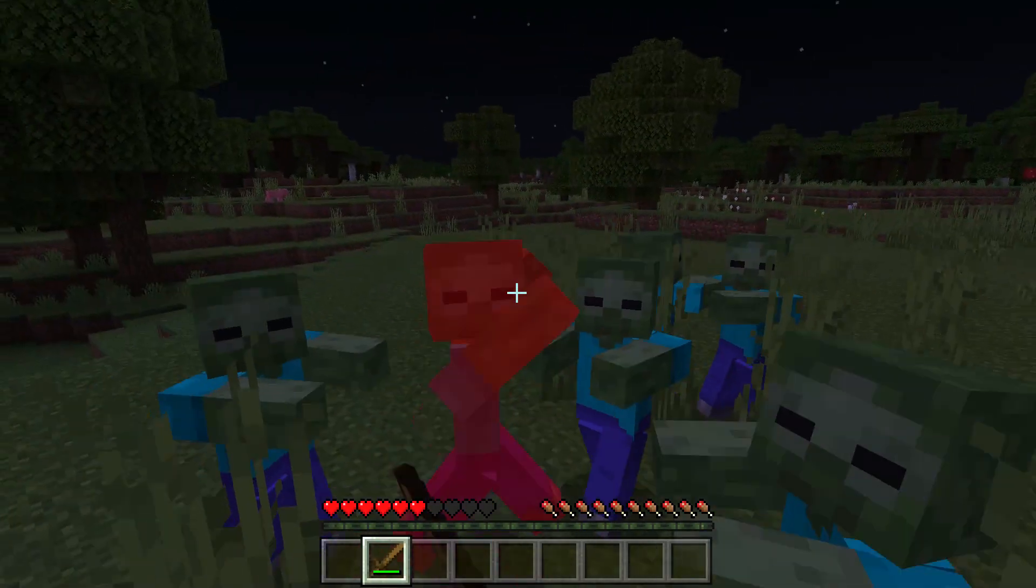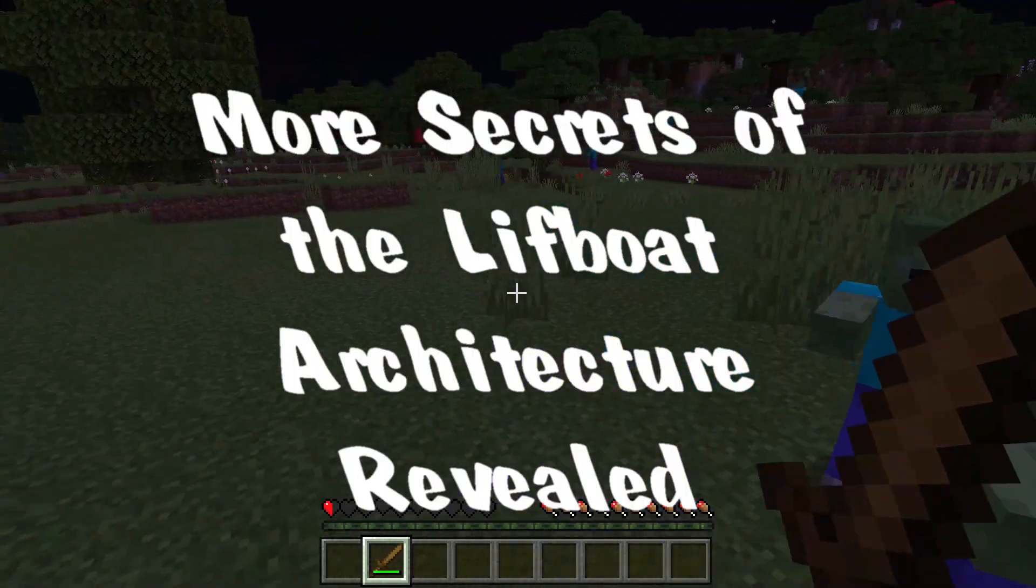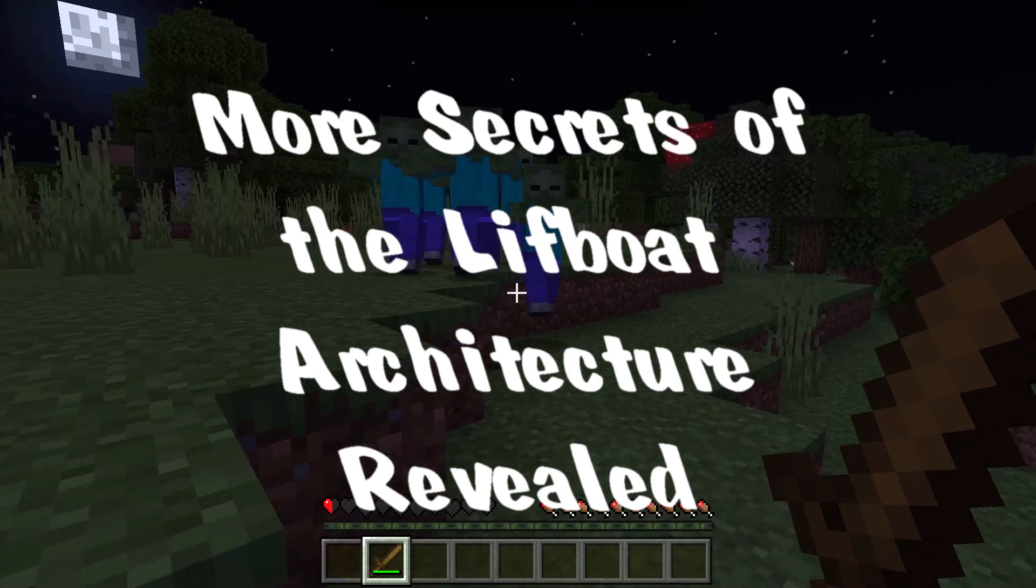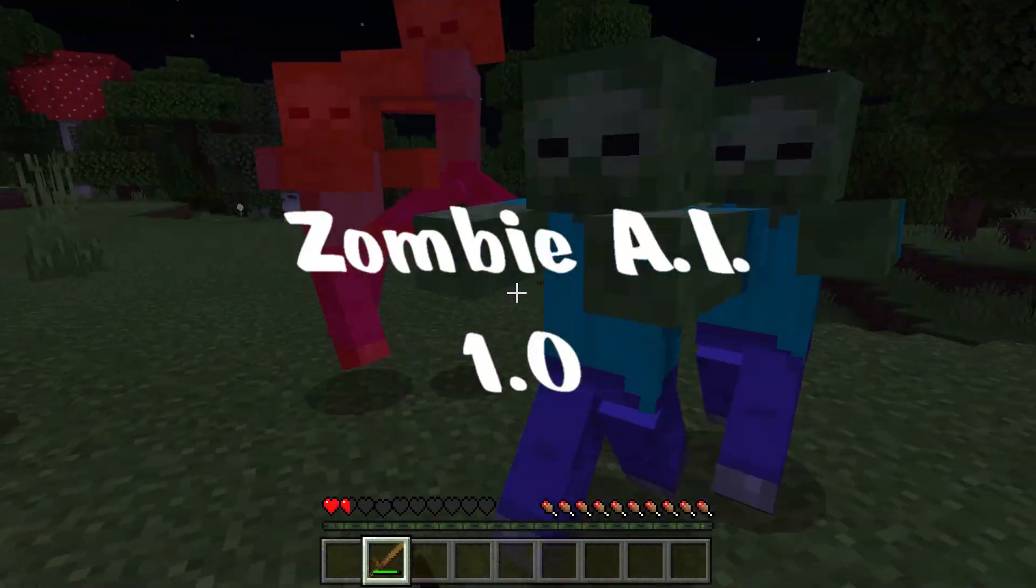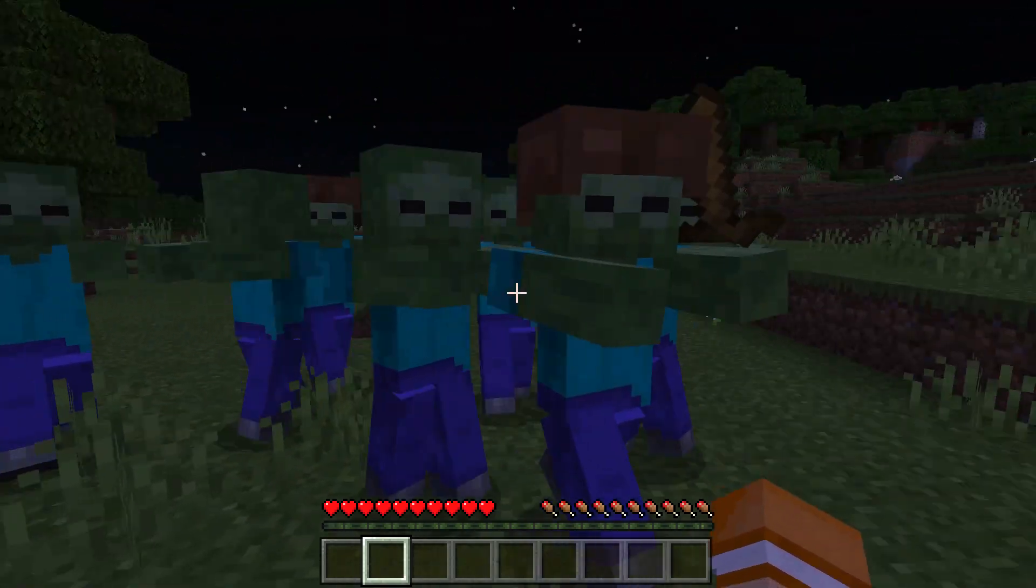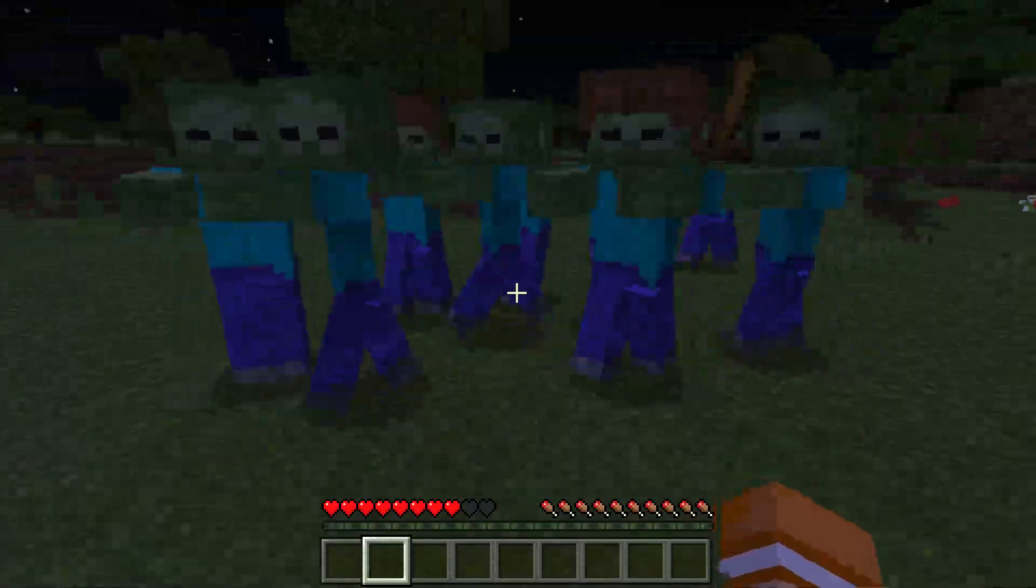Have you ever wondered what makes the mobs on the Lifeboat Network such formidable opponents? It seems like they are really thinking when they gang up on you like they do. The answer lies in the artificial intelligence algorithms that mimic behavior of real zombies.